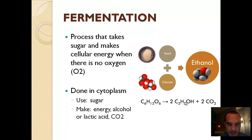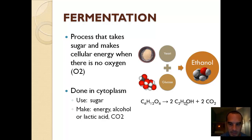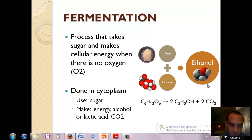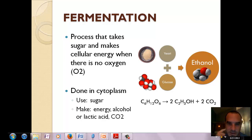Fermentation is going to happen in the cytoplasm of the cell — outside of the mitochondria. They're going to use sugar again, and then there are two different pathways. Some simple organisms will make alcohol: they eat sugar, release that alcohol into their environment, and release CO2. That's for a simple yeast. When you run out of oxygen, you don't start releasing alcohol — because that would be pretty bad for your body. You release a thing called lactic acid. Lactic acid is kind of irritating for your muscles.